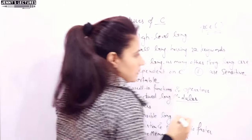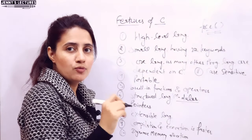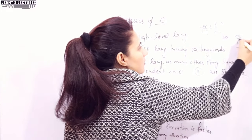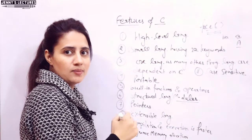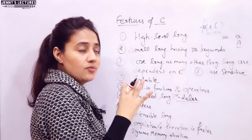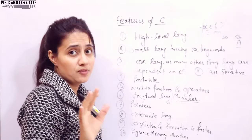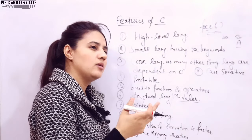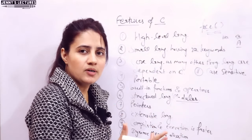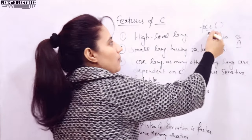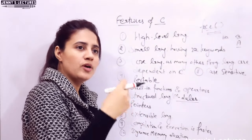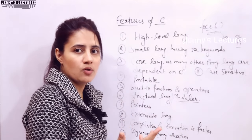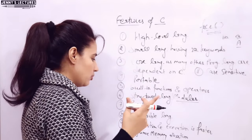C is a case sensitive language — you have to be careful about this. If you write 'a' and 'A', these are different and have different meanings. C reads lowercase and uppercase letters differently. Also, regarding dynamic memory allocation, you can allocate memory at runtime using the malloc() or calloc() functions, and you can free memory at any time at runtime. You can also change the memory allocation of any data structure at runtime using malloc() and calloc(). We will discuss this when we write programs.